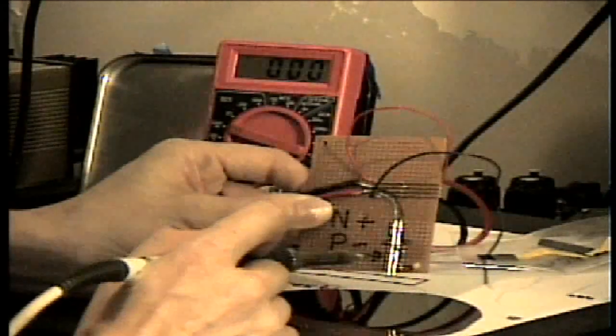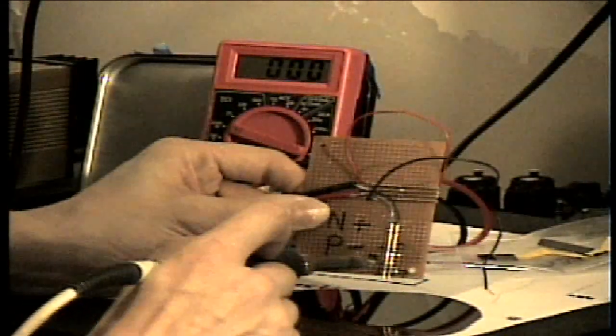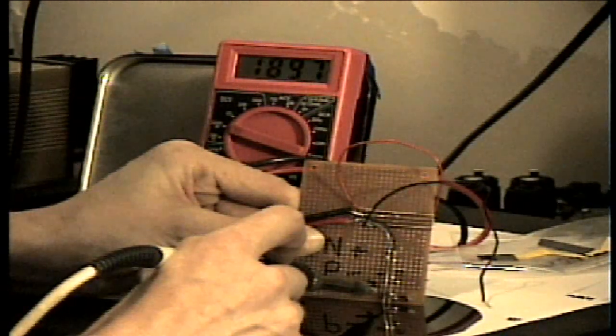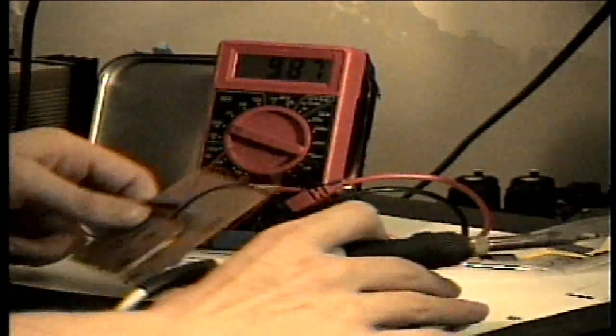Oh. Is the soldering iron on? Oh, it is on. Sorry, I have it backwards. What we should see is the meter should swing in the positive direction for this wafer. So, it's swinging in the positive direction.